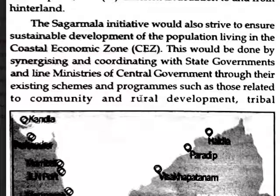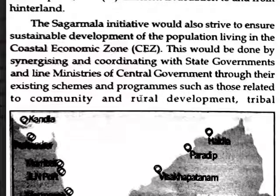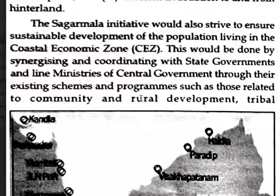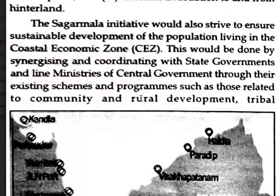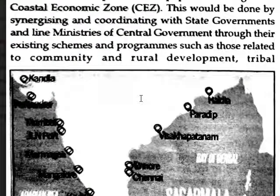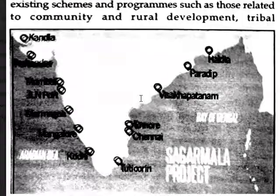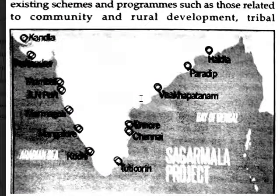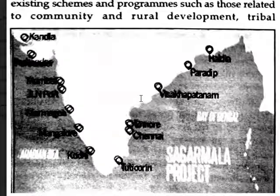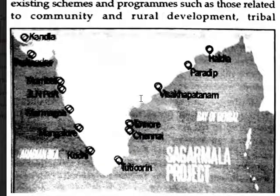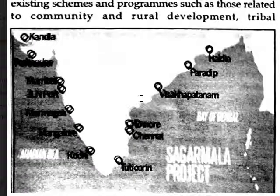This would be done through synergy and coordination of state governments and line ministries of the central government through their existing schemes and programs, such as those related to community and rural development. Here you can see the Sagarmala project coverage in the coastal area, including Chennai, Kochi, Kerala, and Kandla.